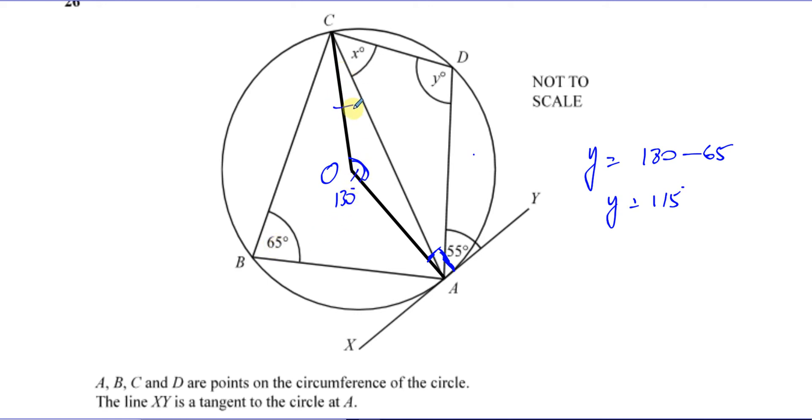So CBA and COA come from the same two points. They're standing on the same arc, but the one at the center here must be twice the one at the circumference. So that's 130. Now, if this is 130 and this is the radius and this is the radius, these two must be the same. So that's 50 left divided by 2, 25, and this is 25. So now what I can say is if that's 25 and that's 55, and this is a right angle, 55 plus 25 is 80, this must be 10 degrees.